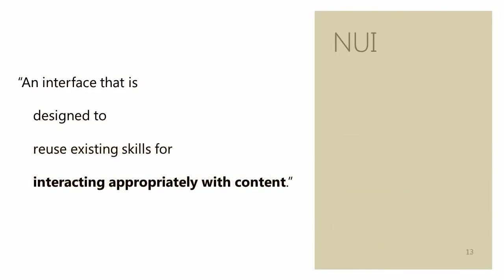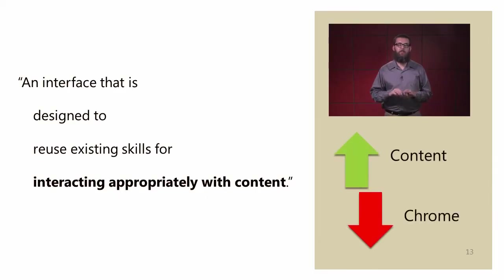Finally: interacting appropriately with content. We already talked about appropriateness, so let's focus on the content. People use your application to view, search, create, or modify content. They don't care about the Chrome or non-content interface elements, so you need to maximize the content and minimize the Chrome. If you create a design where the user can directly interact with the content with no buttons or other Chrome, that's probably a good start. You only need to add interface elements when it's necessary to make the application easier to use or understand.